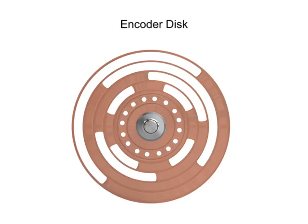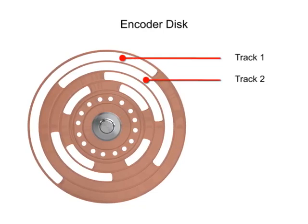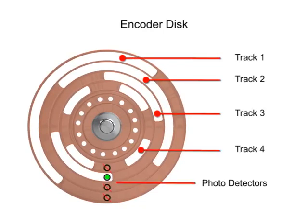The encoder disc consists of a series of opaque and transparent tracks mounted to a rotating shaft. The tracks of the disc are arranged concentrically around the center of the shaft. Photo detectors assigned to each track designate the resolution of the encoder. The higher the number of concentric tracks, the higher the accuracy.